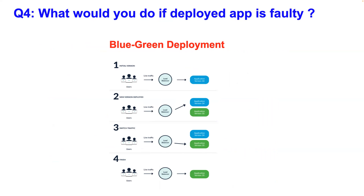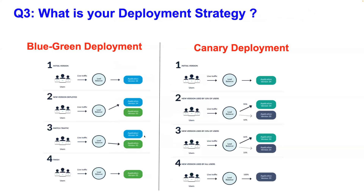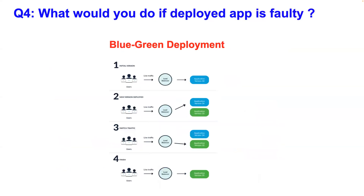The fourth question is: what do you do if the deployed application is faulty or has security vulnerabilities? One of the easiest ways to answer this is to reference blue-green deployment. If something goes wrong, you can immediately point your load balancer back from version 35 to version 34. With blue-green, rollback is straightforward — you just switch the load balancer. The answer is: we have a rollback pipeline and because we use blue-green deployment, rollback is very easy for us.